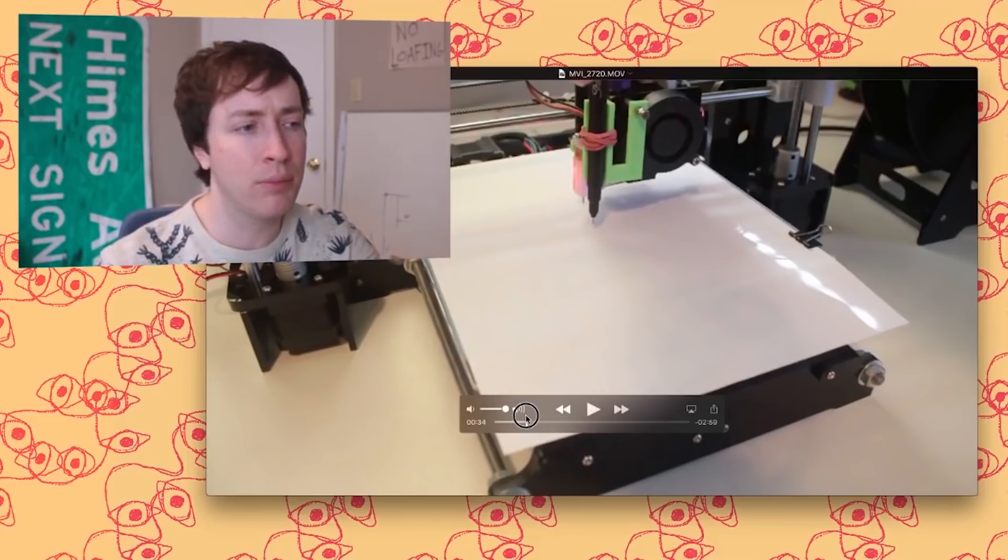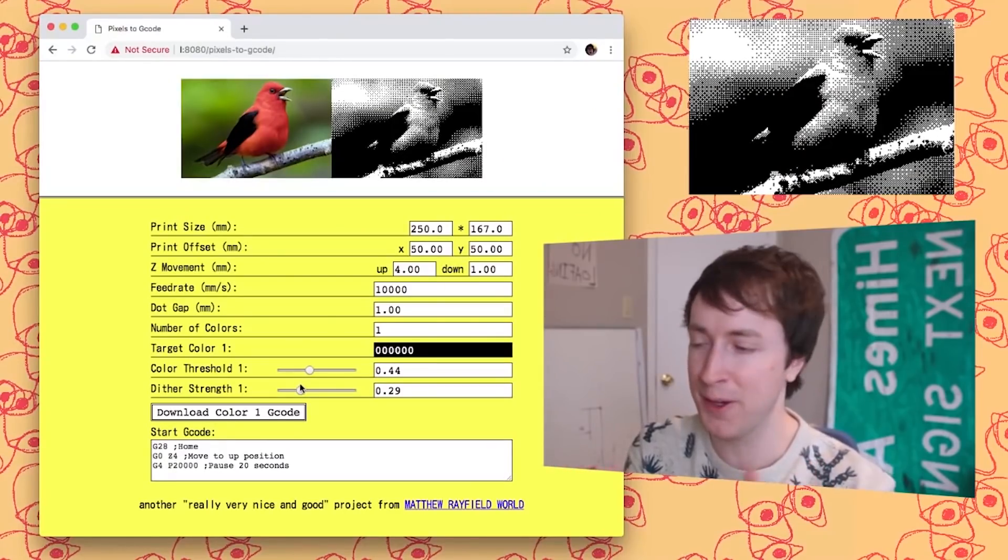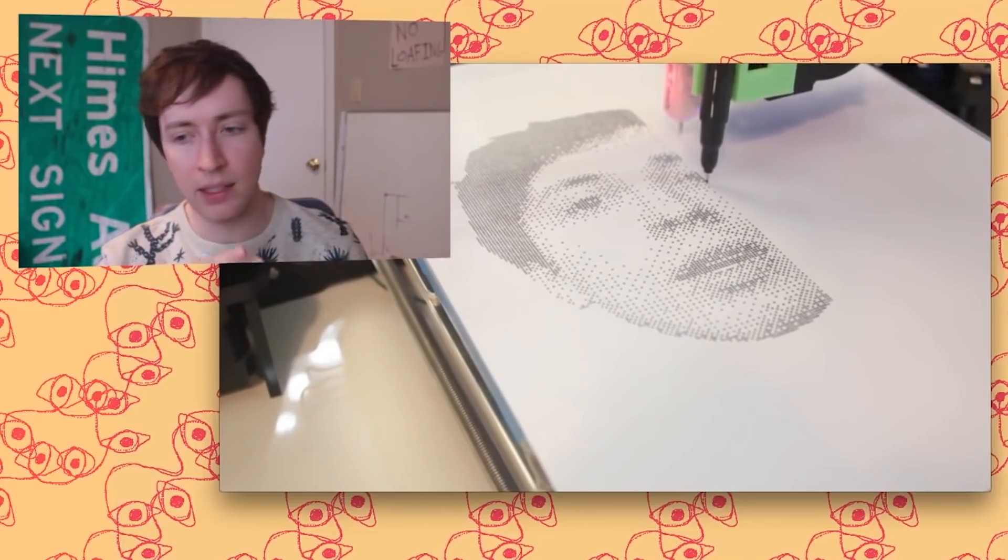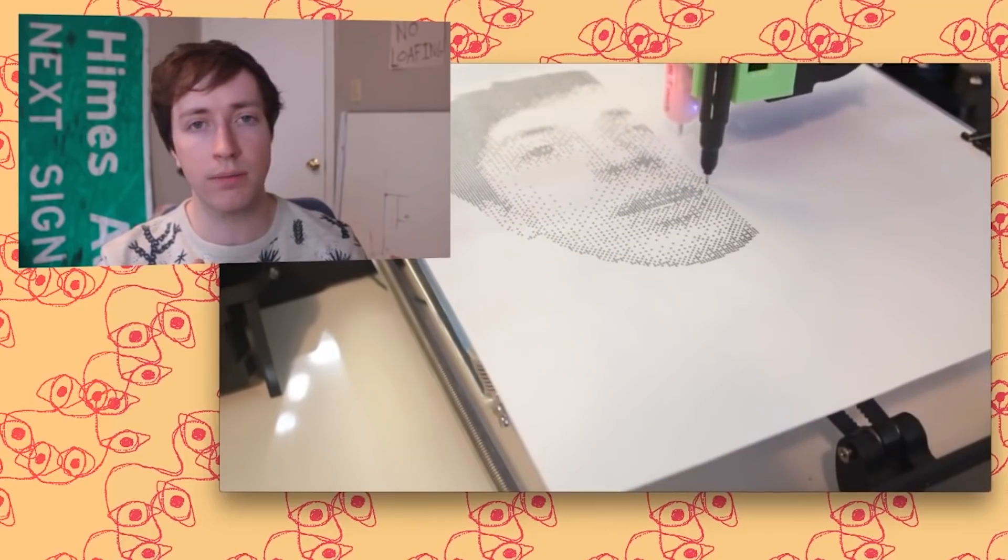What's especially cool is that the web app includes an option to create multi-color prints where you can select colors from the original image to separate out, and the G-code will include a pause statement that will allow you to swap out the pen color. So cool.